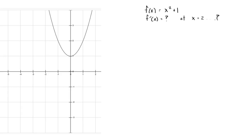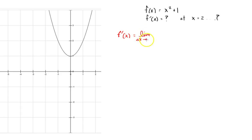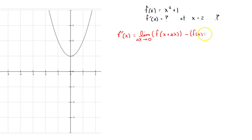The main equation we want to look at is f prime of x — in other words, the derivative of f of x — which is the limit as delta x approaches 0 of the slope of the secant line: f of x plus delta x, minus f of x, all divided by delta x.